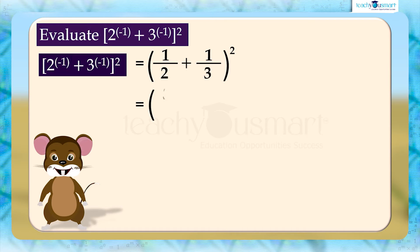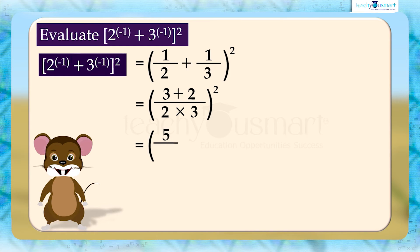Equals 3 plus 2 divided by 2 multiplied by 3, the whole square. Equals 5 by 6, the whole square.